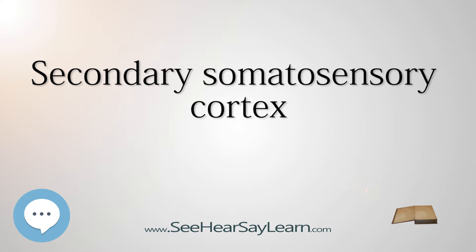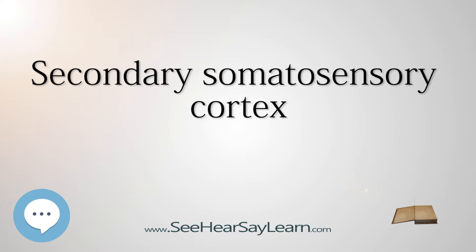Posterior to PV is the secondary somatosensory area, area S2, which must not be confused with region S2, which designates the entire secondary somatosensory cortex of which area S2 is a part. Deeper in the lateral sulcus lies the ventral somatosensory area, whose outer edge adjoins areas PV and S2 and inner edge adjoins the insular cortex.